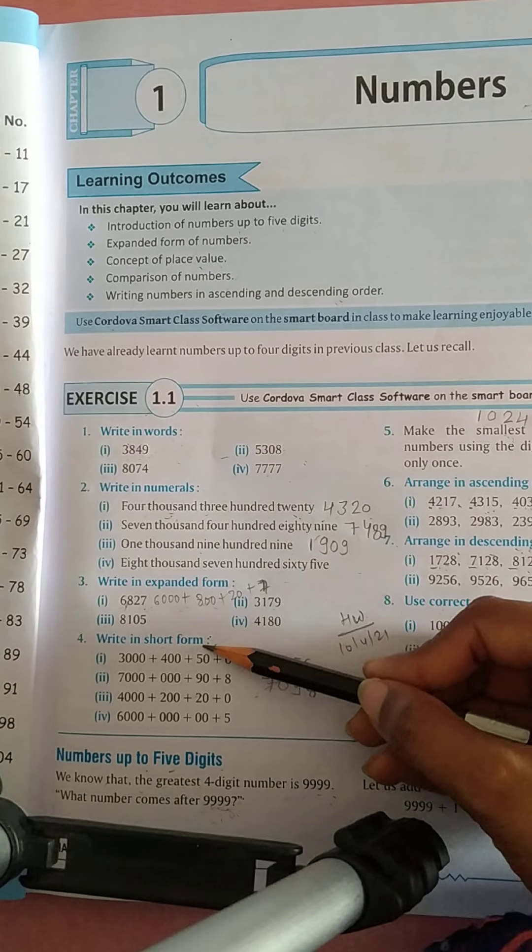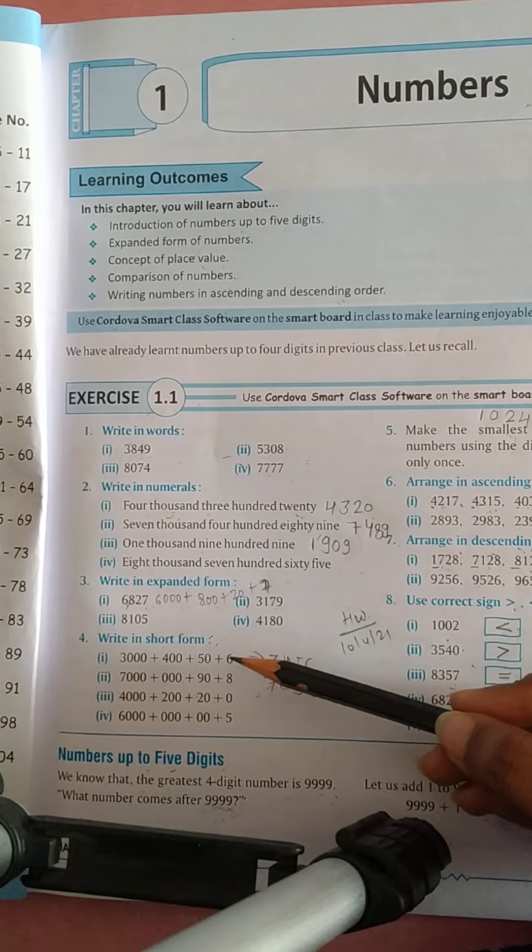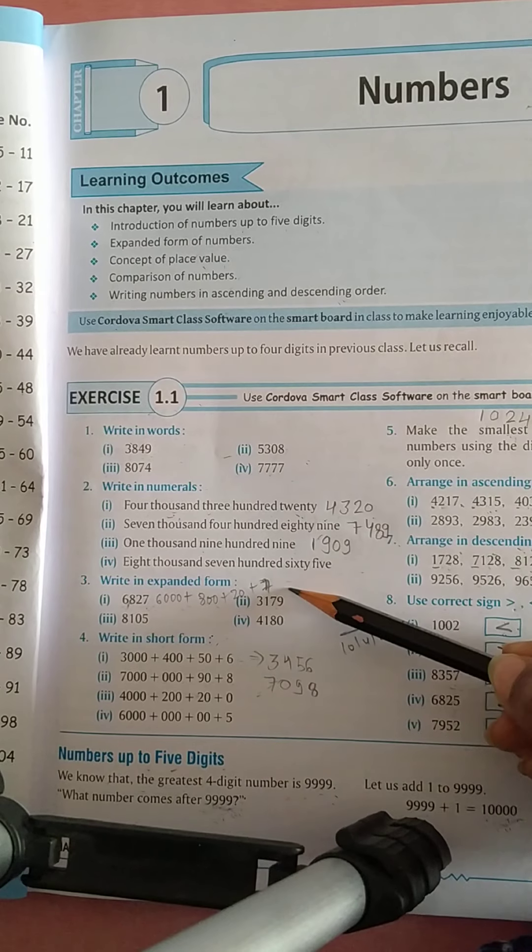Then question number 4, writing short form. So expanded form में है number और उनको short form में write down करना है.